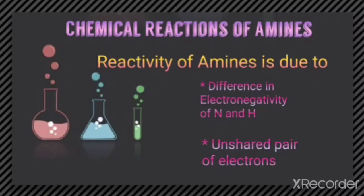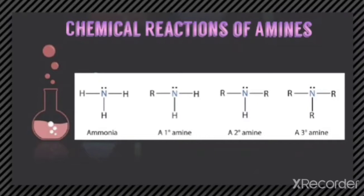The reactivity of primary, secondary, and tertiary amines differs because of the number of hydrogen atoms attached to nitrogen. In a primary amine, two hydrogen atoms are present; in a secondary amine, only one hydrogen atom is present; and in a tertiary amine, no hydrogen atom is attached to nitrogen. The number of hydrogen atoms attached to nitrogen also decides the course of reactions of amines.